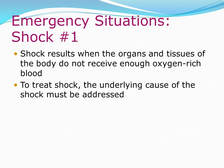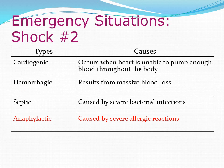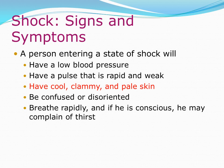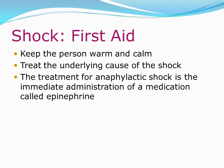Emergency situation — shock: Shock results when the organs and tissues of the body do not receive enough oxygen-rich blood. Types include cardiogenic shock (heart unable to pump enough blood), hemorrhagic shock (massive blood loss), septic shock (bacterial infection), and anaphylactic shock (severe allergic reaction). Signs include low blood pressure, rapid and weak pulse, cool and clammy pale skin, confusion or disorientation, rapid breathing, and thirst. First aid: Keep the person warm and calm, treat the underlying cause. Anaphylactic shock requires immediate administration of epinephrine.